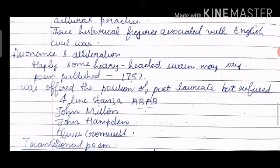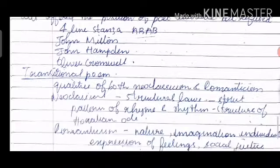The poem was published in 1751. Thomas Gray was offered the position of Poet Laureate but he refused. Now let us look into the structure of the poem: it consists of four-line stanzas with an ABAB rhyme scheme.